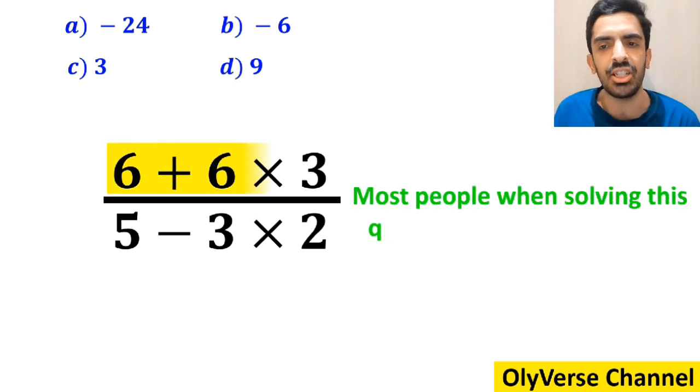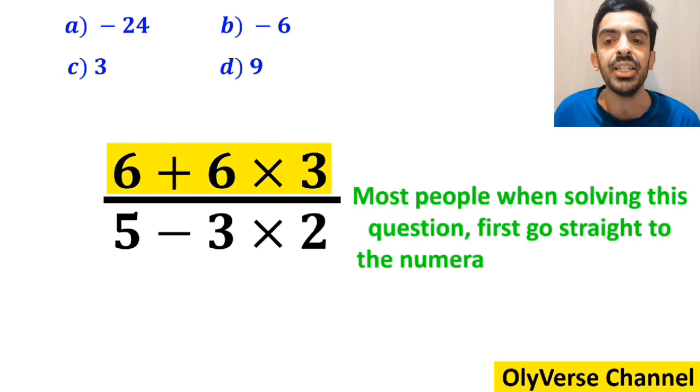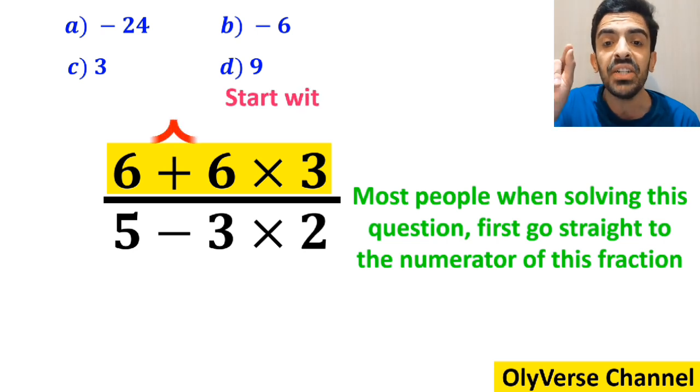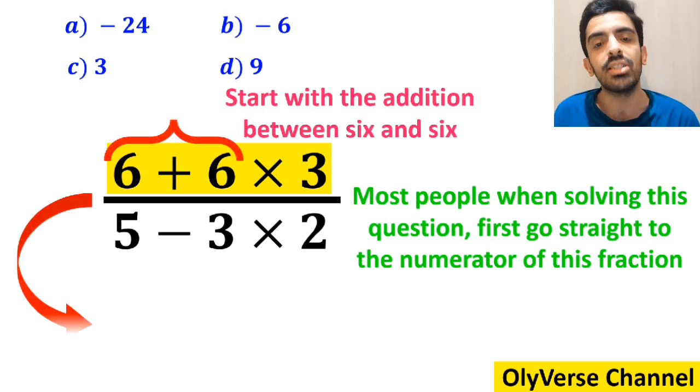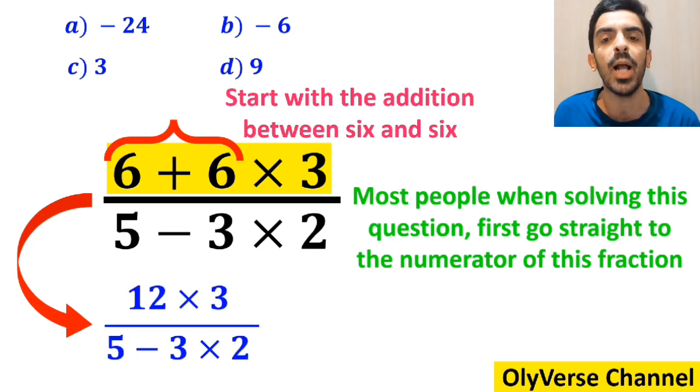Many people, when solving this question, first go straight to the numerator of this fraction and start with the addition between 6 and 6. So, instead of the original expression, they rewrite it as 12 multiplied by 3 over 5 minus 3 times 2.